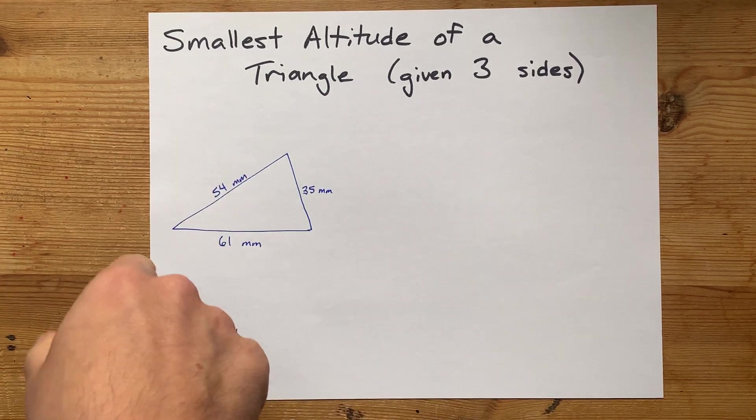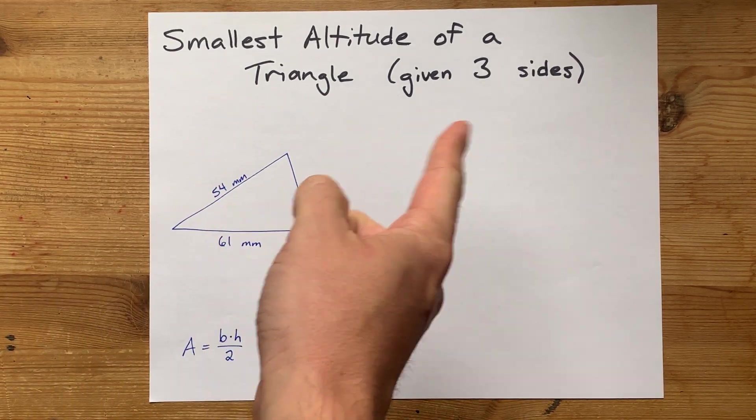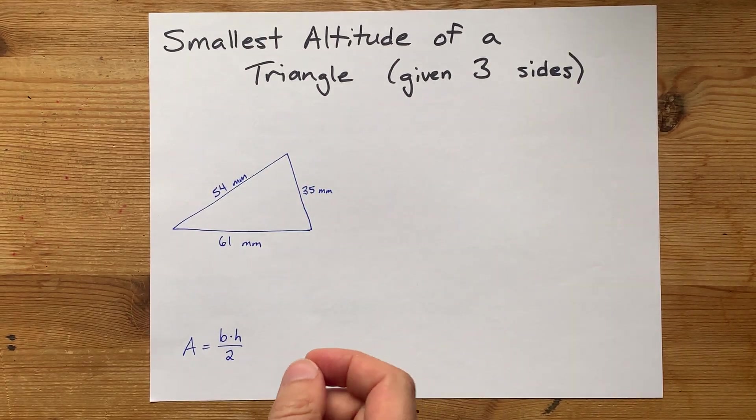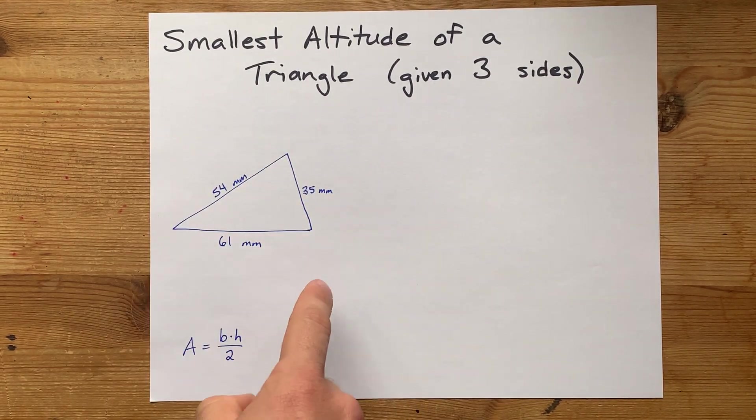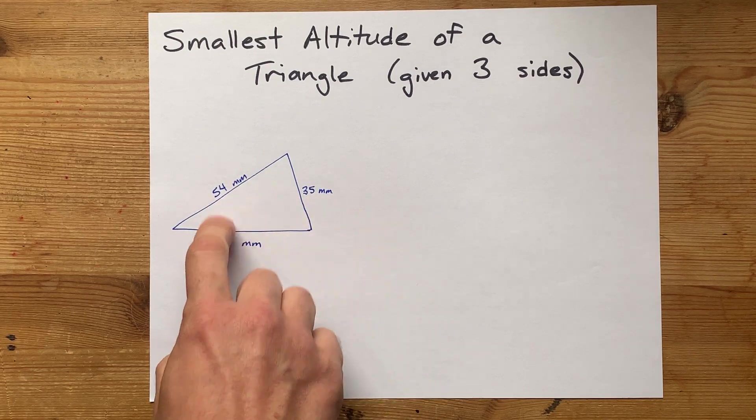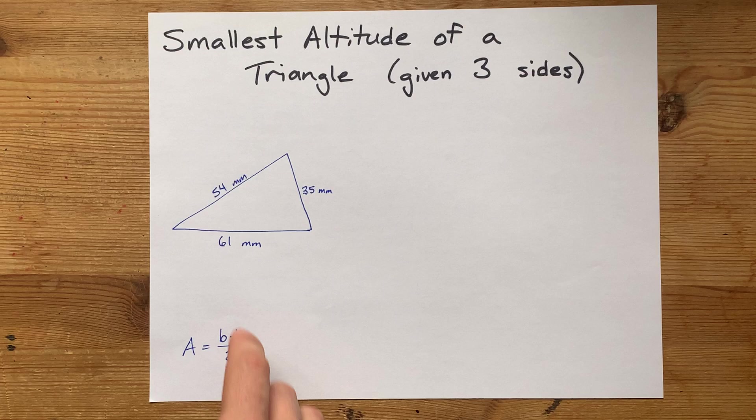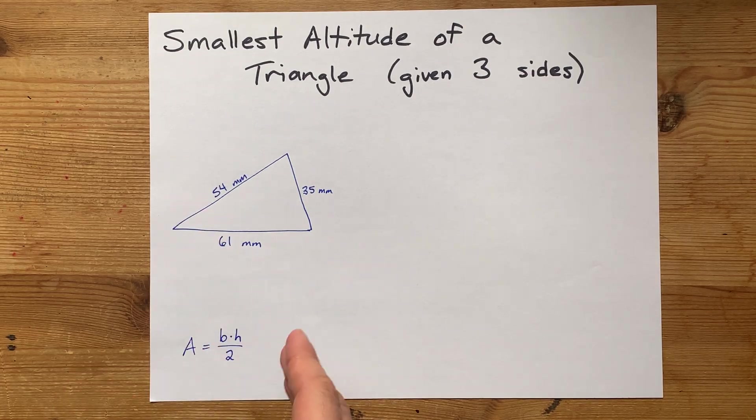I've been asked how to find the smallest altitude of a triangle if you're given the three sides of that triangle. I have an example triangle here with side lengths of 35, 54, and 61, and the way you're going to find the altitude is to use the area of that triangle.